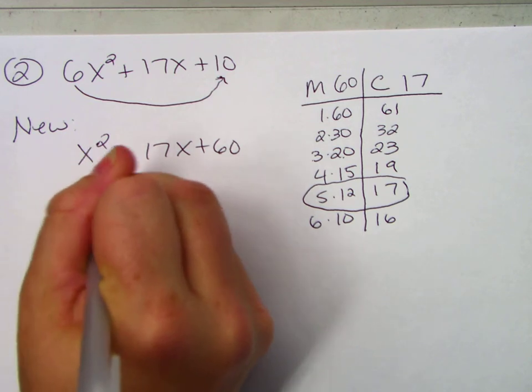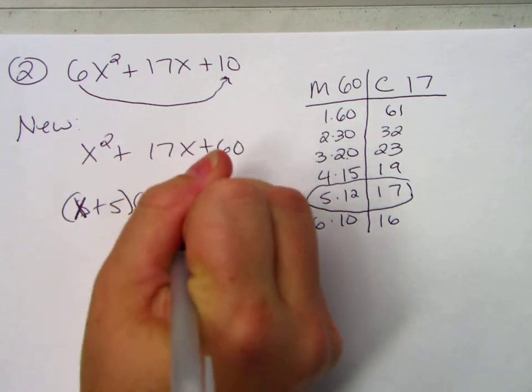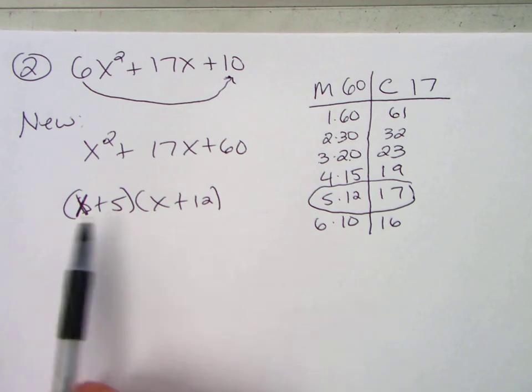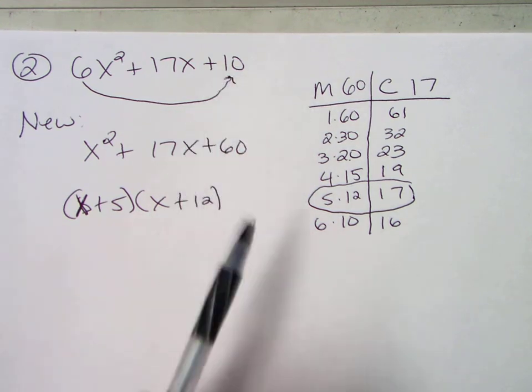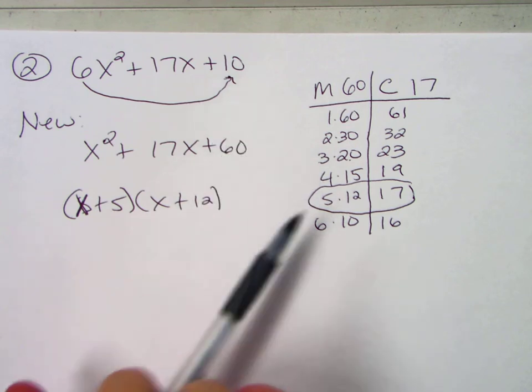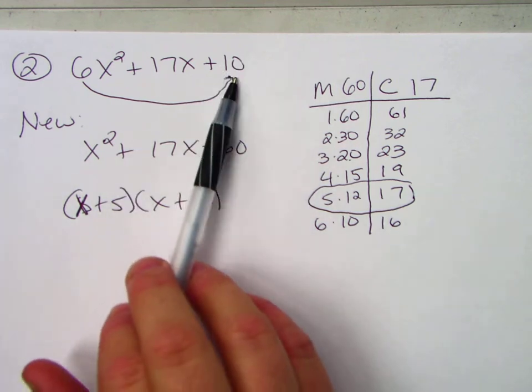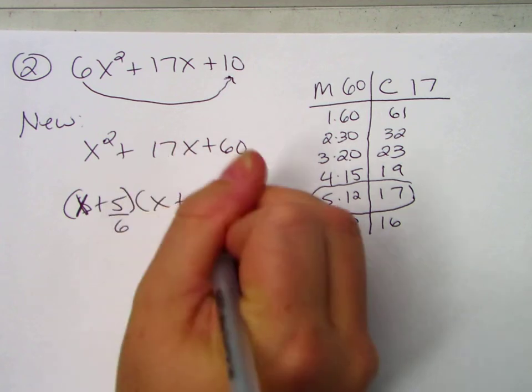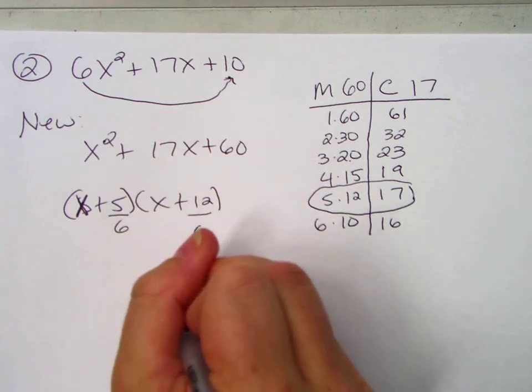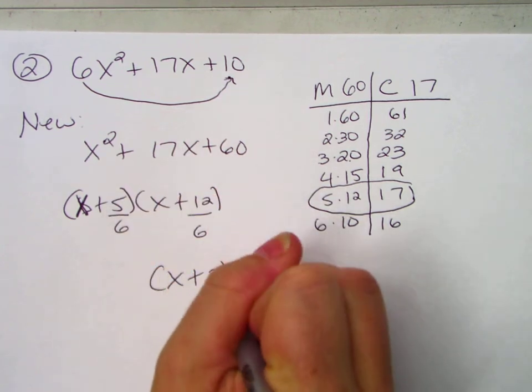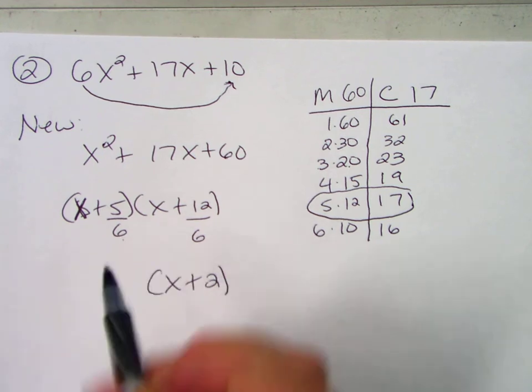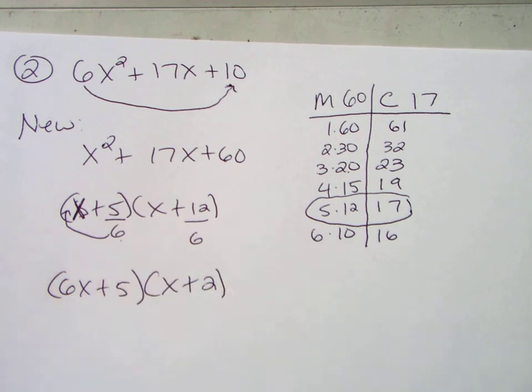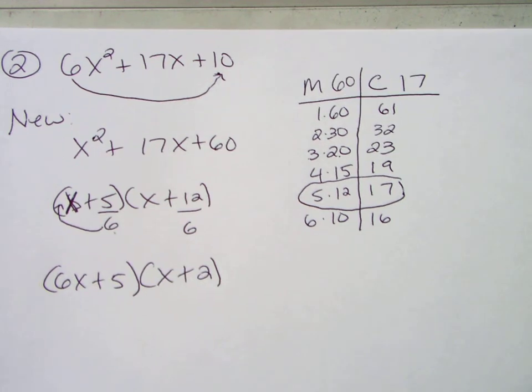Okay? X plus 5, x plus 12, and then are we done? Is that our answer? No. If we multiply this out, we do not get back to where we started. We slid the 6 over. Now we've got to slide it back. So we multiplied by 6, so we divide by 6. One of them divides. 12 divided by 6 is 2. Since the 6 doesn't go in a 5, it slides to the front. 6x plus 5. And we're done. Not too horrible.